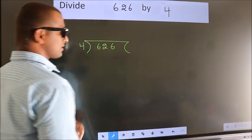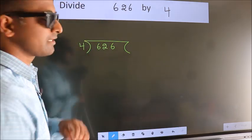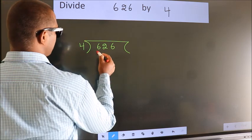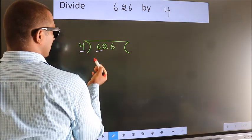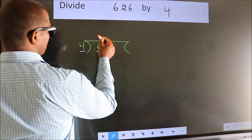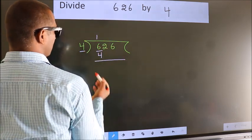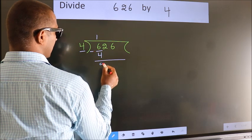This is your step 1. Next, here we have 6, here 4. A number close to 6 in 4 table is 4 once 4. Now, we should subtract. We get 2.